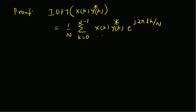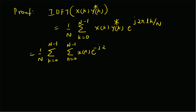Now, by using the definition of X of k and Y of k in terms of their original signals, we can rewrite the summation as follows. It is equal to 1 by N, summation k equal to 0 to N minus 1, where X of k is again summation n equal to 0 to N minus 1 of x of n times e to the power minus j 2 pi n k by capital N, and then Y of k conjugate.